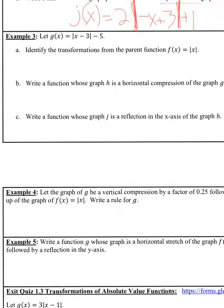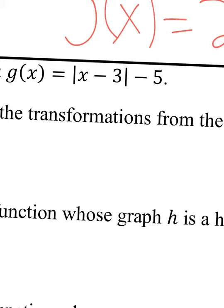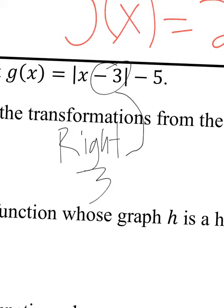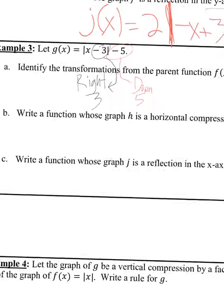Example 3: let G of x equal the absolute value of x minus 3, minus 5. Identify the transformations. If I have minus 3 on the inside, that means it's going to go to the right 3 units. And then the minus 5 is going to go down 5 units.